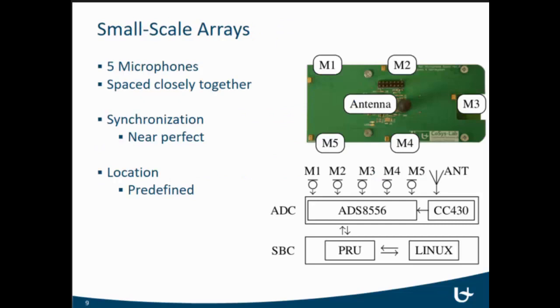For the small-scale arrays, we have five microphones. They are spaced closely together. The synchronization is near perfect because they are all sampled with the same simultaneously sampling analog-to-digital converter. They are synchronized near perfectly. And also for the location, relatively to each other, if we have the location and orientation of one microphone, all five microphones are placed on a single PCB, so we have absolute knowledge of the location of those microphones.